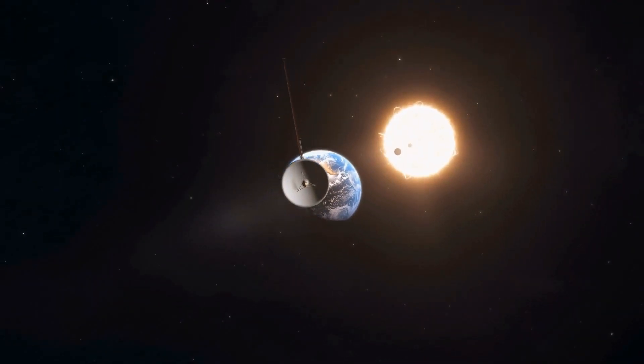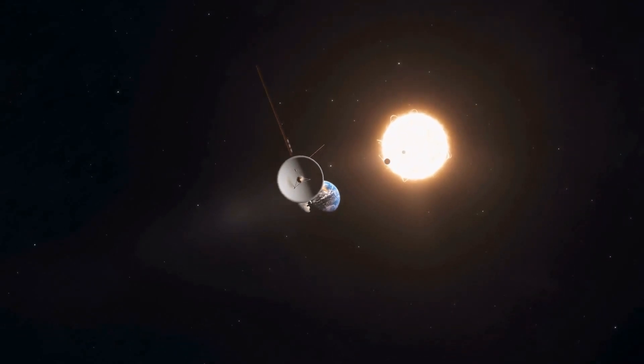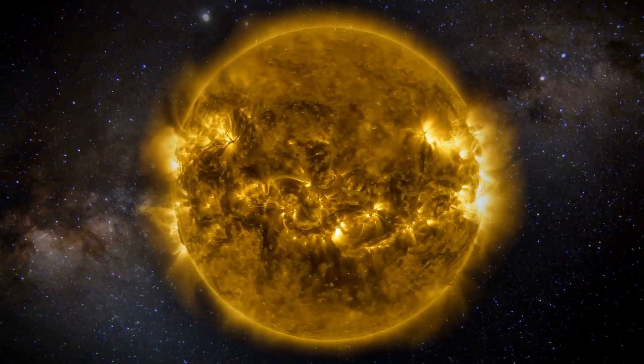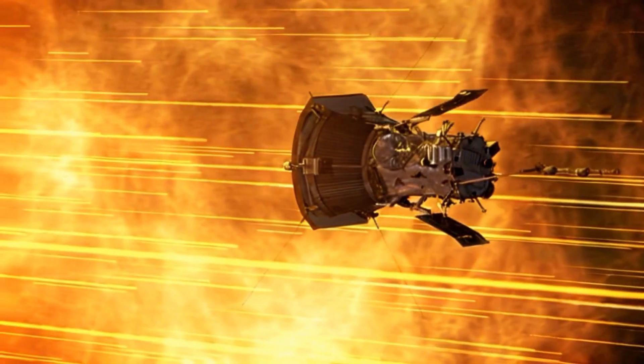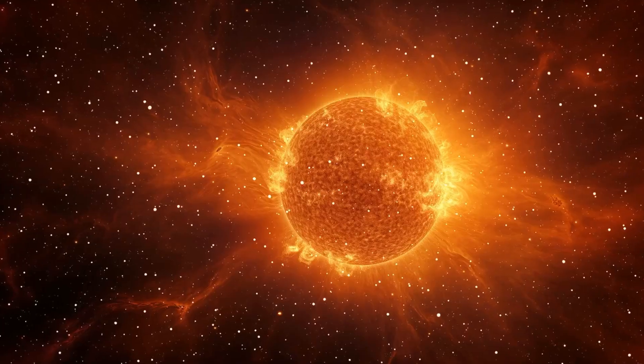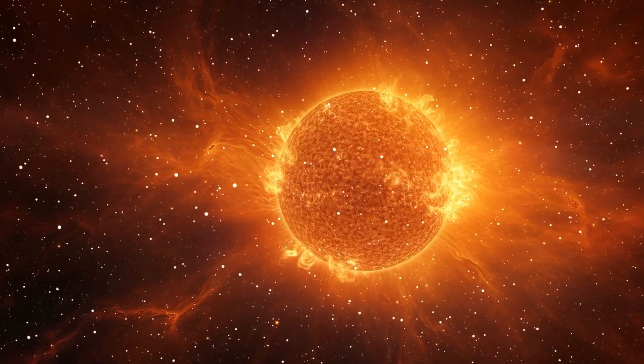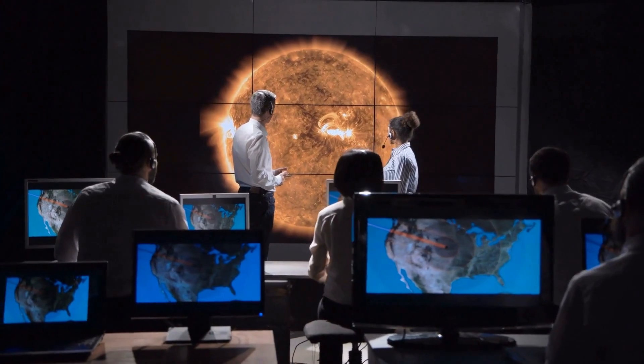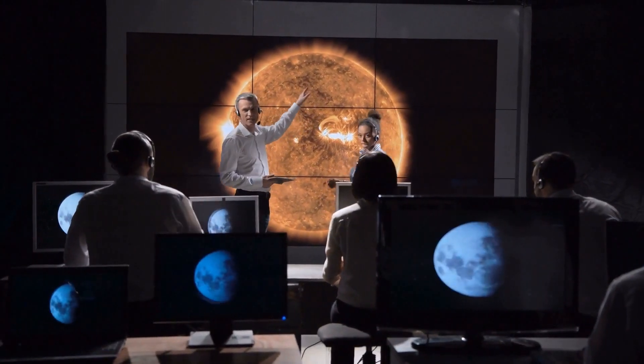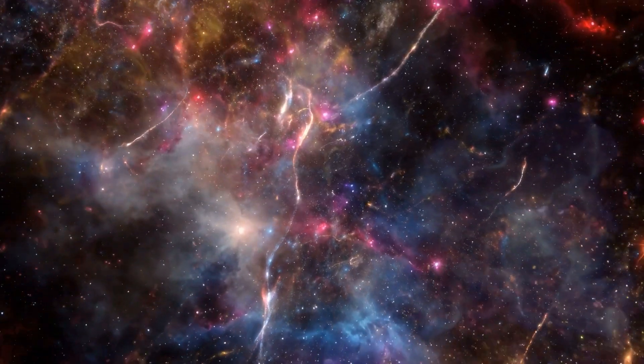Meanwhile, Voyager 2 uncovered critical data about the Sun's influence on its surroundings. As the spacecraft approached the boundary, the solar wind slowed, heated and condensed. These observations have expanded our understanding of how stars interact with the space around them.